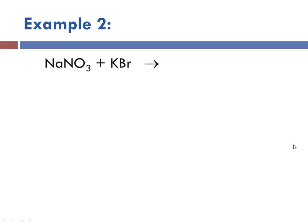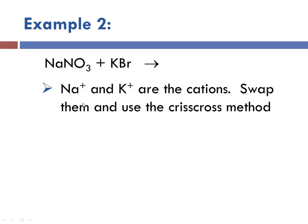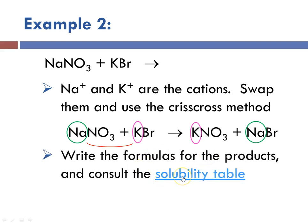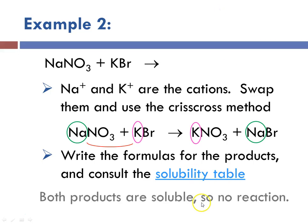Example two: sodium nitrate with potassium bromide. Sodium and potassium are our cations, so we're going to swap them using the crisscross method — the old switcheroo. That would result in potassium nitrate and sodium bromide. Consulting our solubility table, potassium nitrate is soluble — all nitrate salts are soluble, no exceptions. Sodium bromide is also soluble because the cation is not silver, mercury, or lead. Both products are soluble, so there is no reaction.